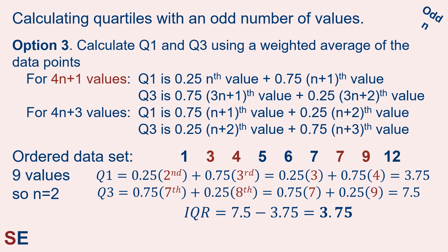These three different options give us three different values for the IQR, so we should always be clear about which option we're using when we calculate and report the IQR for our data set.